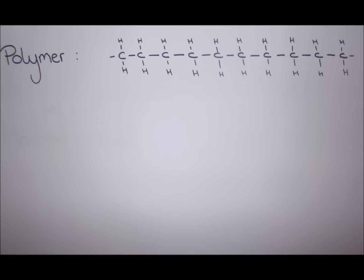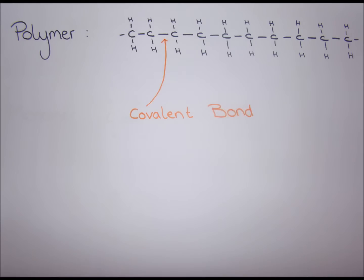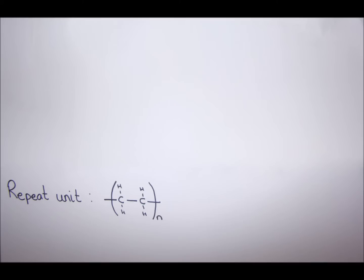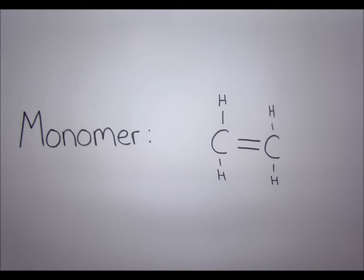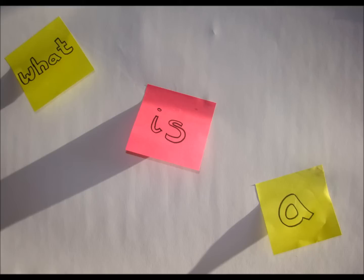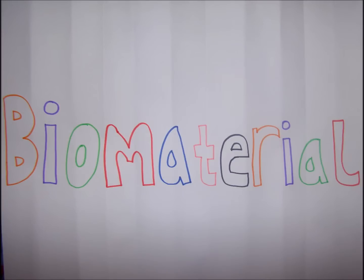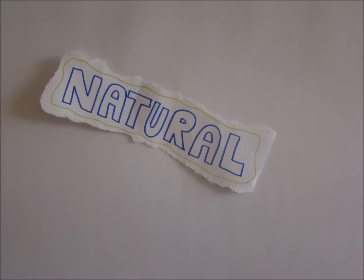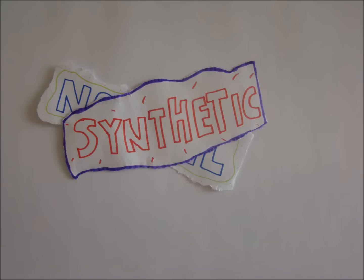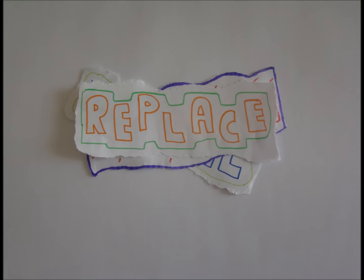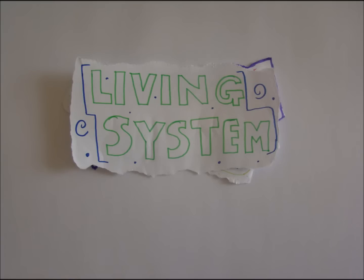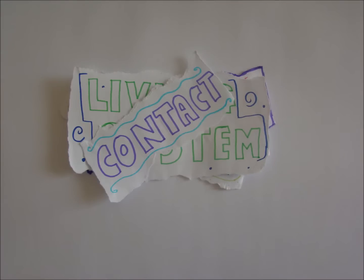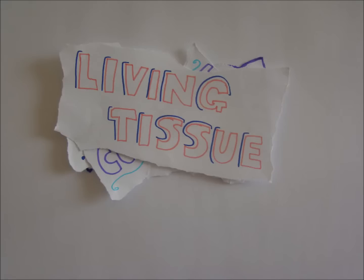A polymer is a large molecule formed from covalently bonding repeat units of monomers in a long chain. A biomaterial is a natural or synthetic material used to replace part of a living system or to function in intimate contact with living tissue.